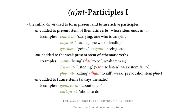NT is also added to future stems to form the future active participle. Future stems all end in sya or iṣya, therefore they are all thematic, so we don't have a difference between adding nt or ant — we add nt throughout. So we get, for example, from gam: gamiṣyant ('about to go'); from kṛ: kariṣyant ('about to do'), and so on.